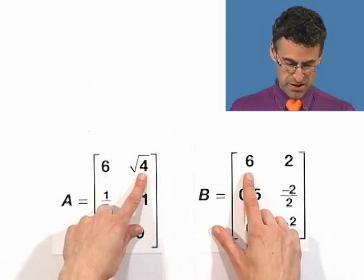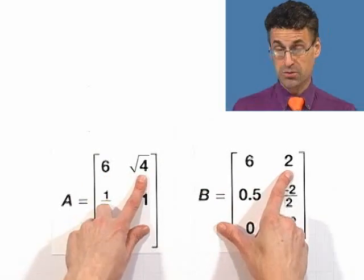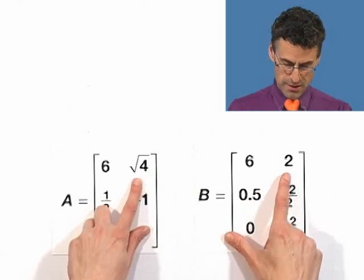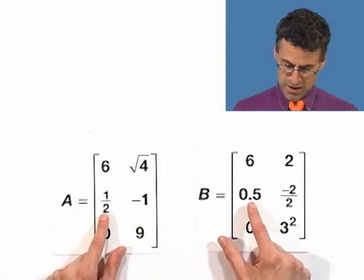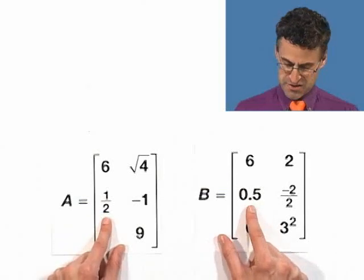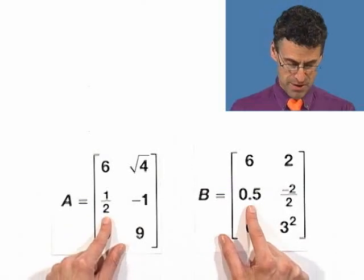6 and 6, they're the same. Square root of 4, that's a fancy way of saying 2, so they're the same number. In fact, those are equal. What about here in the 2, 1 spot? So A21 and B21, this is a half and this is 0.5. Those are both the same number.